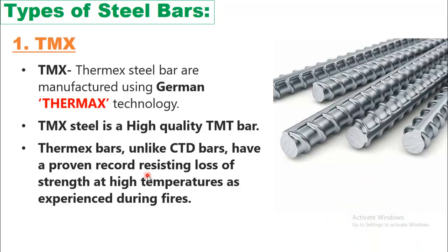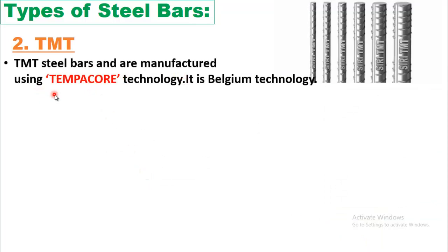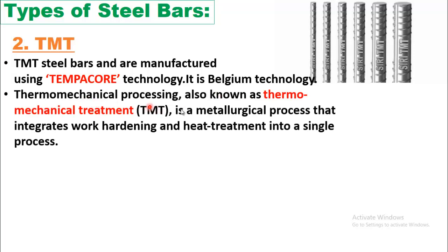The second type is TMT. TMT steel bars are manufactured using Thermocore technology — a Belgium technology, while TMX used German technology. Thermomechanical processing, also known as thermomechanical treatment (TMT), is a metallurgical process that integrates work hardening and heat treatment into a single process.